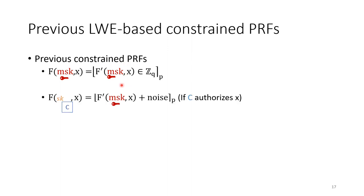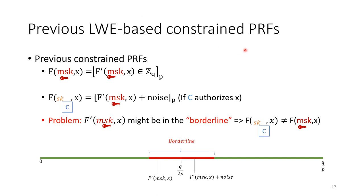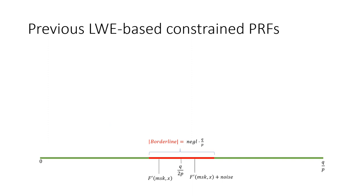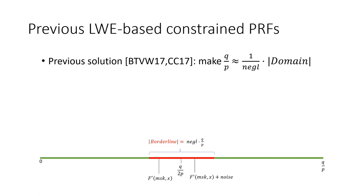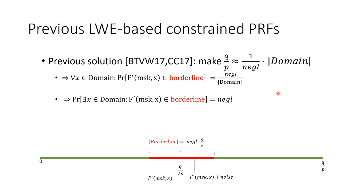When evaluating at point x using a constrained key, we get an intermediate value s' plus noise, and by rounding we get the PRF value. The problem arises when the intermediate value s' is dangerously close to the rounding threshold — in this case, adding noise changes the rounded value and correctness fails. Previous constructions addressed this by making the ratio q/p larger than the input domain of the PRF, then using a union bound argument to show that the probability of any x landing in the borderline region is negligible. But this forces q to be sub-exponentially large.